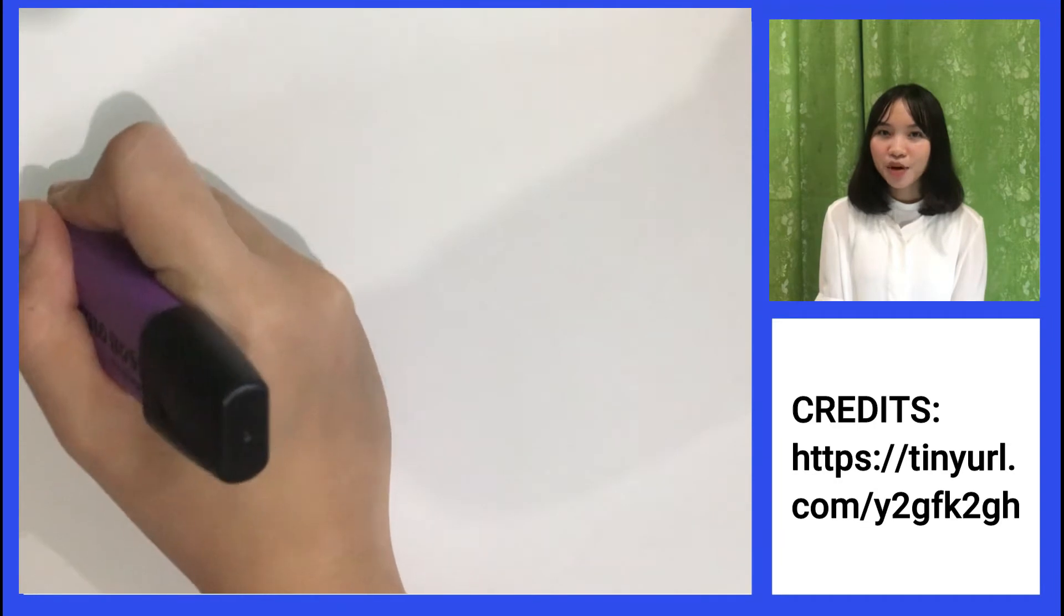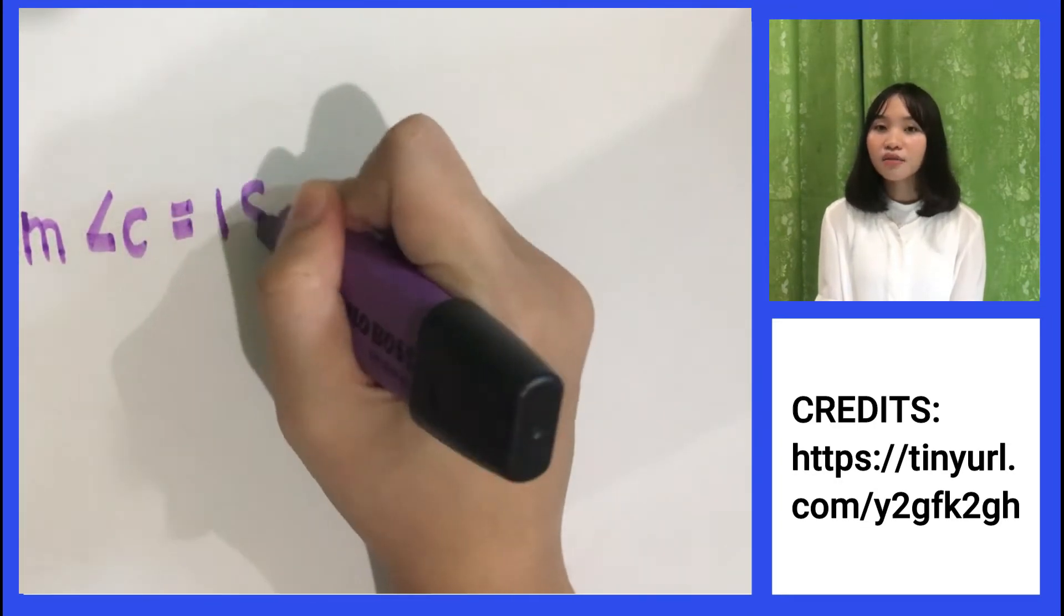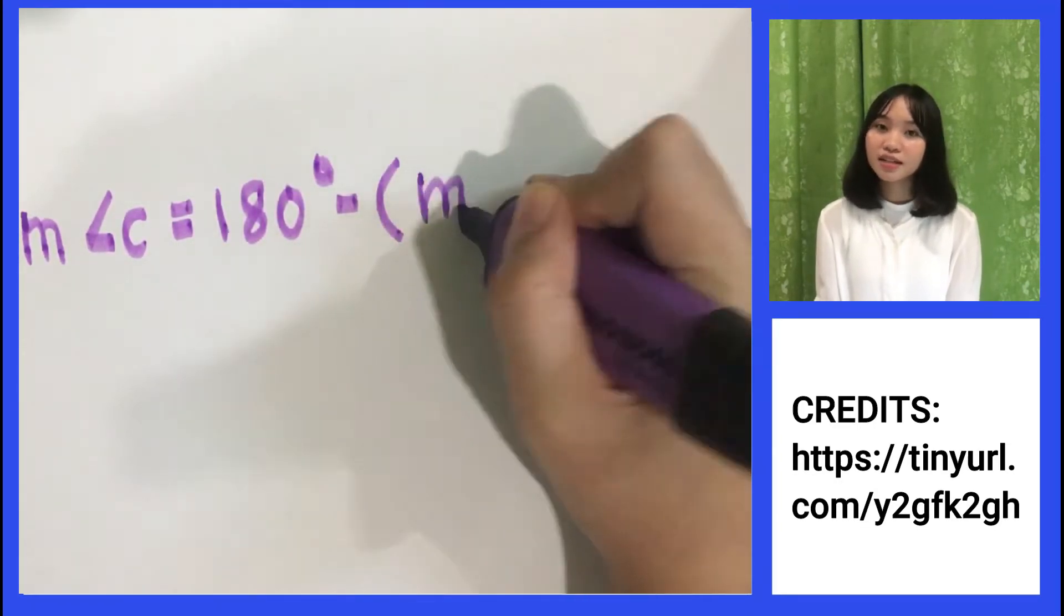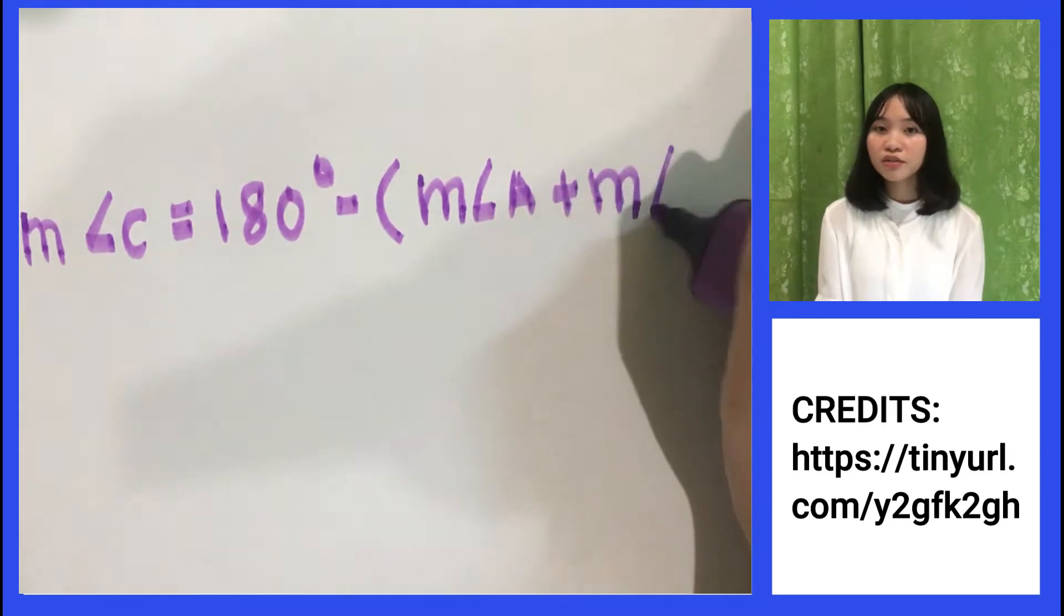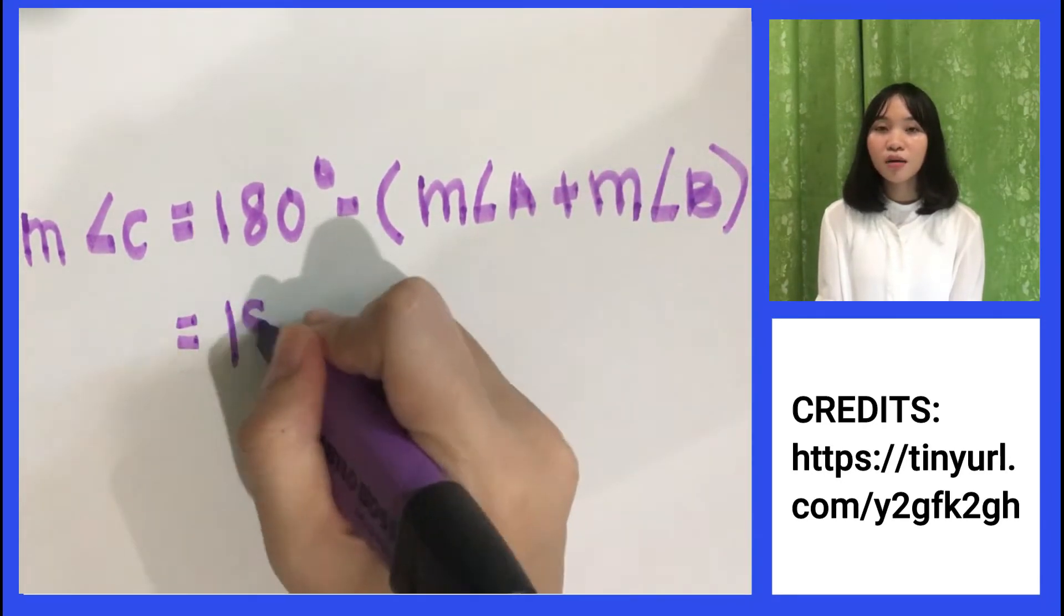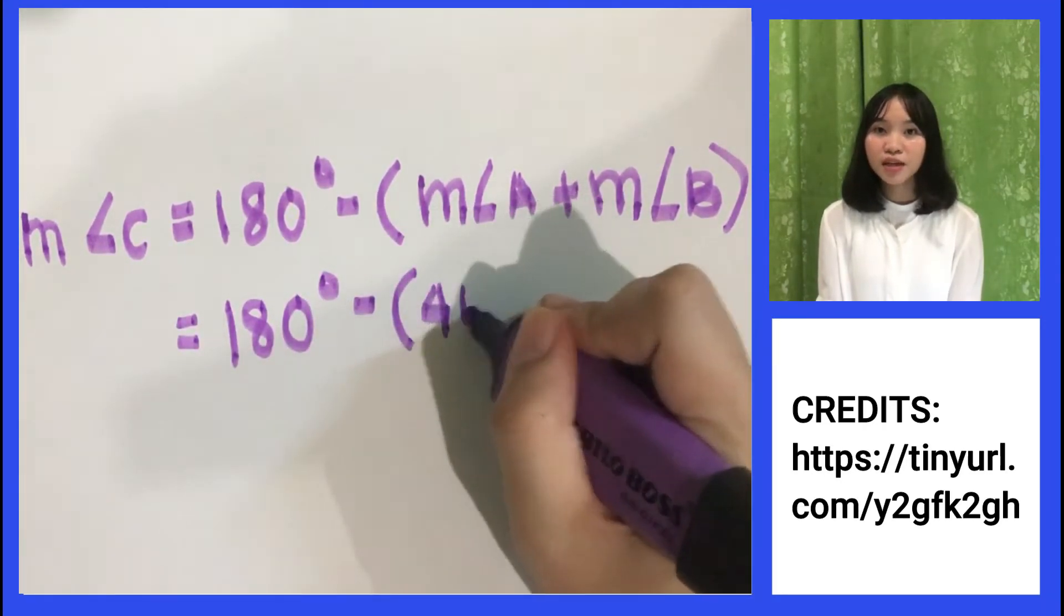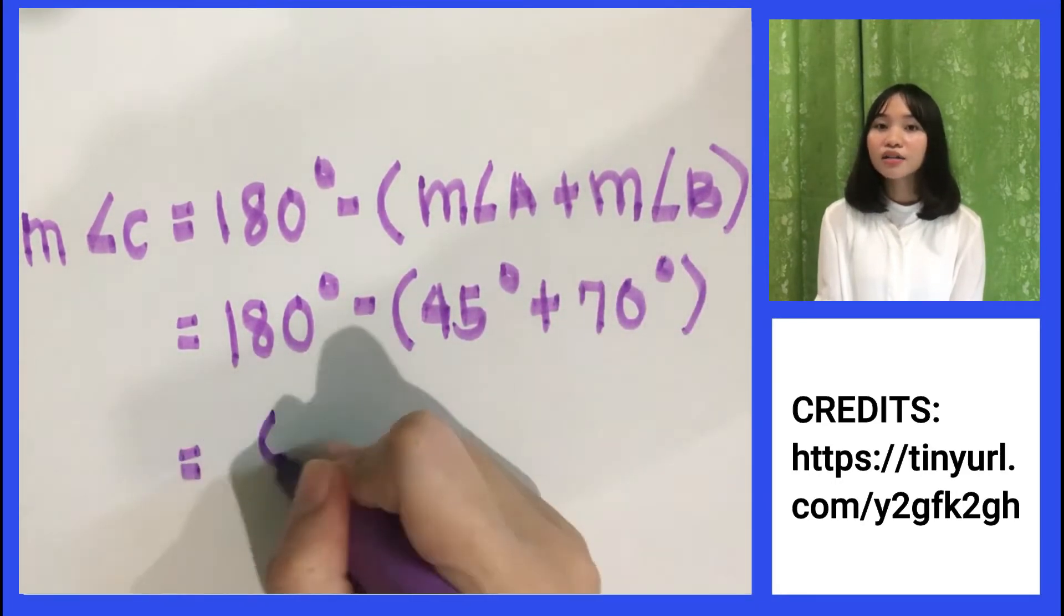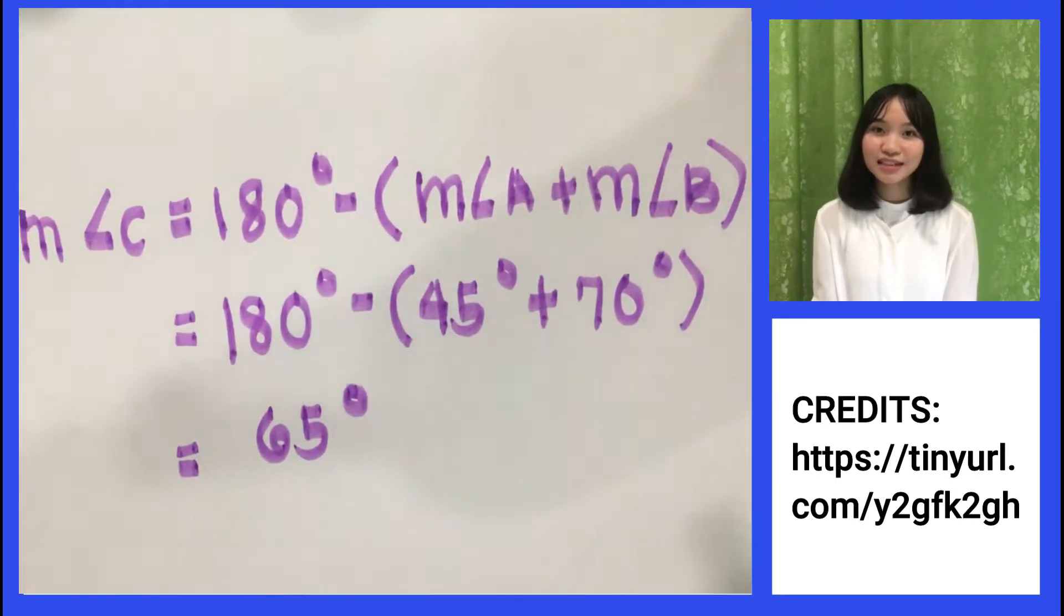The next step is to solve for the measure of angle C. Remember that the sum of the interior angles of a triangle is always equal to 180 degrees. So to solve for angle C, we will subtract the sum of angle A and angle B from 180 degrees. So angle C equals 65 degrees.